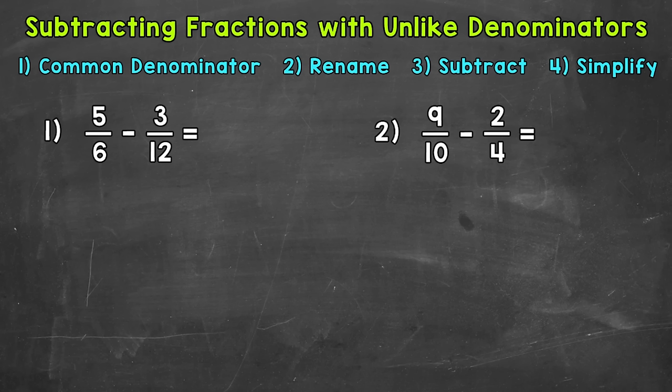So let's jump into our examples, starting with number 1, where we have 5 sixths minus 3 twelfths. When we subtract fractions, we need a common denominator, just like when we add fractions. For number 1, we have a 6 and a 12, so we don't have a common denominator to start with, so we can't subtract quite yet.